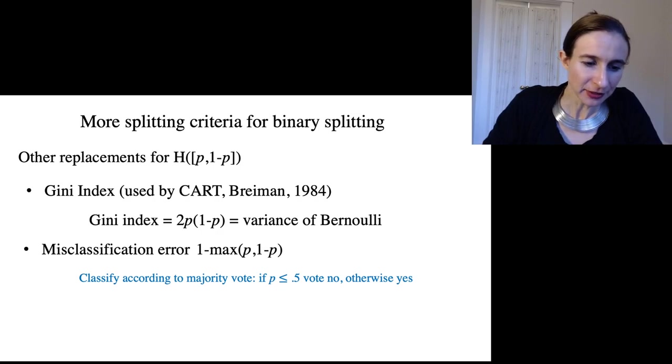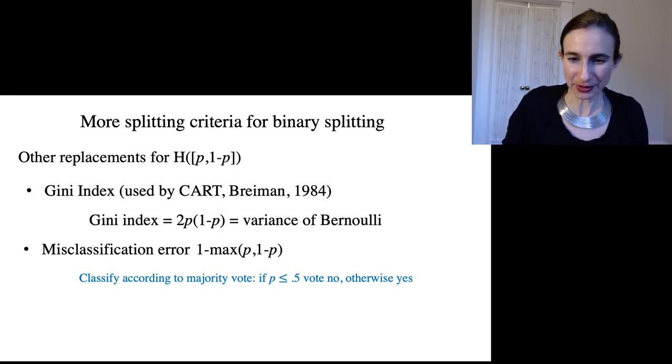If p, the fraction of positives, if that fraction is less than 0.5, you're going to vote negative. Otherwise, you'll vote mostly positives. So we're just voting. You have a bunch of data points. Some are positive, some are negative. You're voting according to the majority vote.